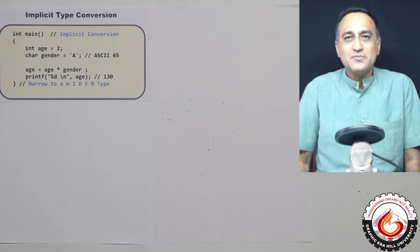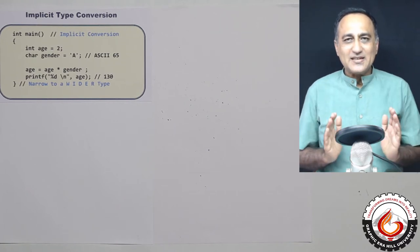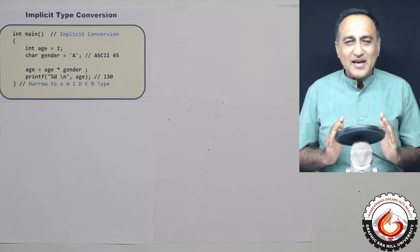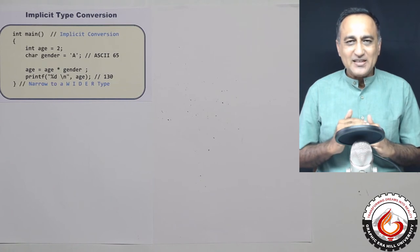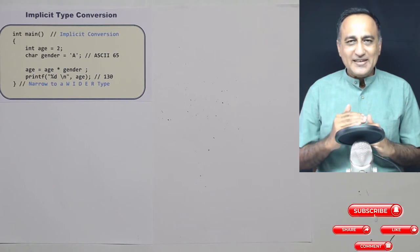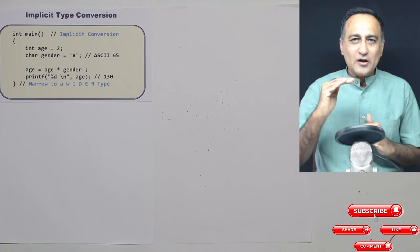But C compiler comes to your rescue. So what it does is it defines different data types in a hierarchy in the sense bool is at the lowest level, next is the character, after that is the short int, then it is int and so on all the way till long double.